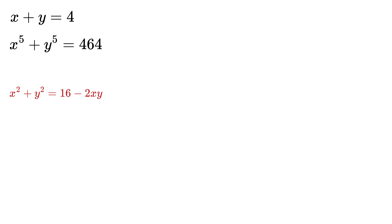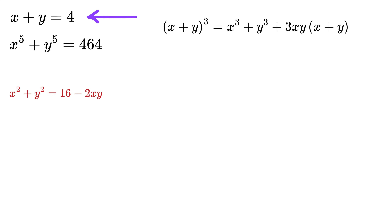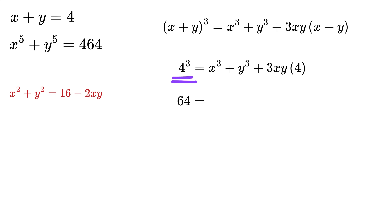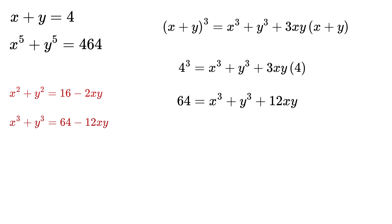We also know the formula for (x+y)³: it equals x³ plus y³ plus 3xy(x+y). Substituting x plus y as 4, we get 4³ equals x³ plus y³ plus 3xy times 4, which gives 64 equals x³ plus y³ plus 12xy. Thus x³ plus y³ equals 64 minus 12xy.